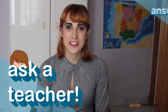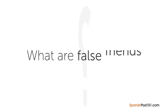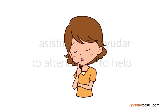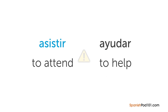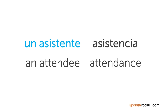Hi everybody, Rosa here. Welcome to Ask a Teacher, where I'll answer some of your most common Spanish questions. The question for this lesson is: what are false friends? There are a lot of words that look similar in English and Spanish, but they don't always mean the same thing. False friends can be a bit deceptive. For example: 'asistir' doesn't mean to help — that would be 'ayudar.' 'Asistir' means to attend, as in 'asistir a un concierto' — to attend a concert. 'Un asistente' is an attendee and 'asistencia' is attendance.